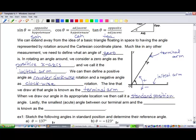Lastly, the smallest acute angle between our terminal arm and the x-axis is called the reference angle. I'm going to use a little theta symbol with a subscript of R, theta sub R, for reference angle.